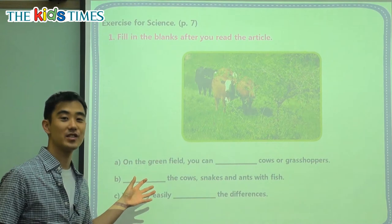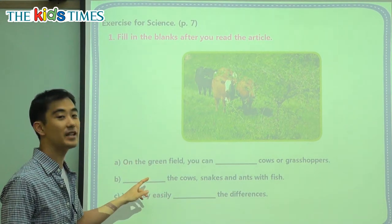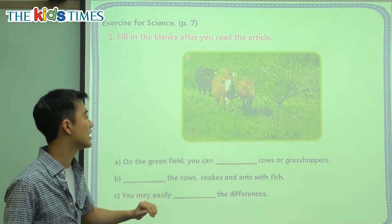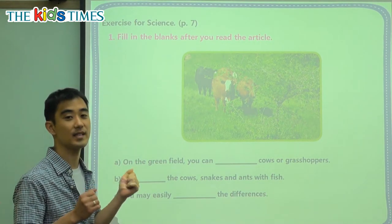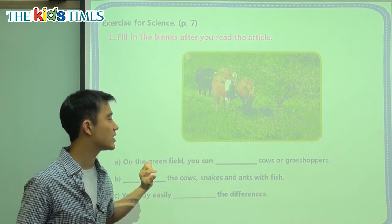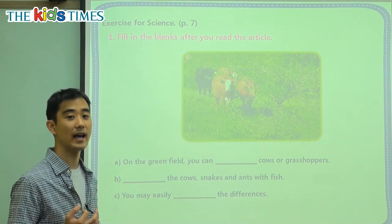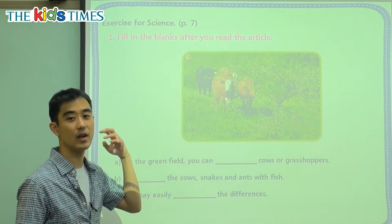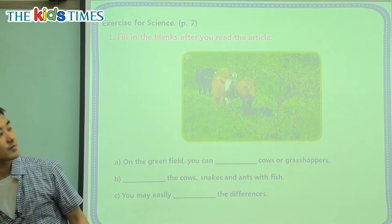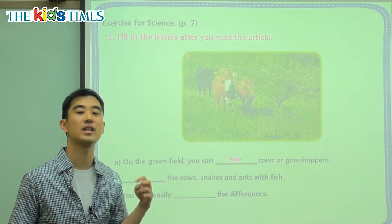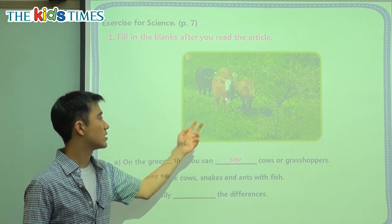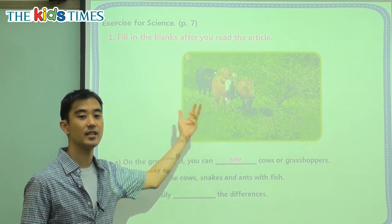Okay, we have three review questions here. First one: on the green field — this beautiful green field where there's lots of plants, trees, and grass — you can blank cows or grasshoppers. So when we are using our eyes, we can look at them, we can watch them, or we can say we can see them. Seeing is when we use our eyes. So on the green field, we can see cows, grass, and trees.